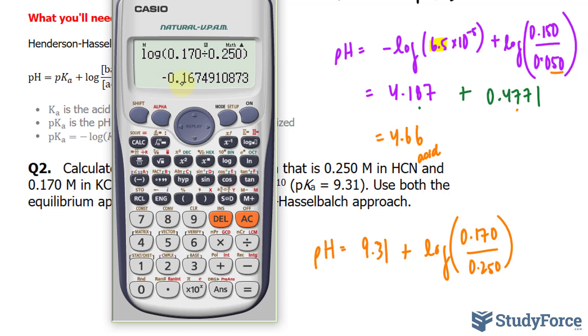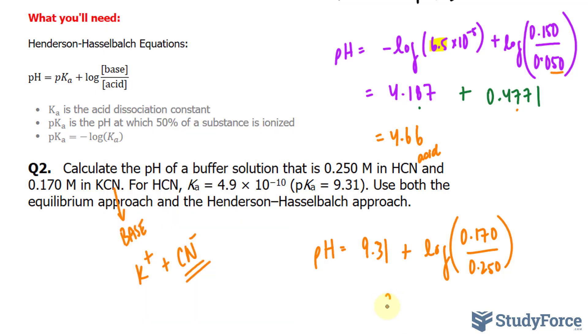We end up with negative 0.167, anything after the seven is insignificant, plus 9.31, and we end up with 9.14. 9.14 is the pH of the solution.